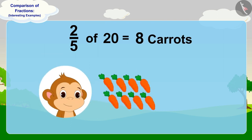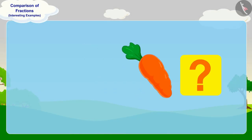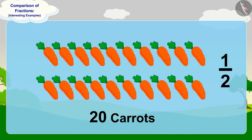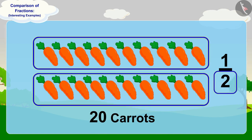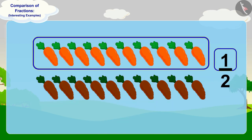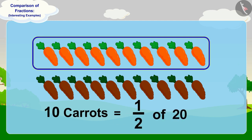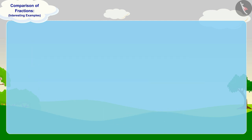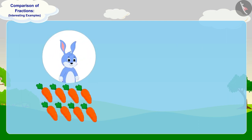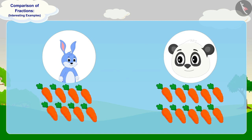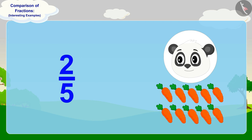Babban will give eight carrots to Banni. Now let us see how many carrots Babban will give to Gulu. To find half of twenty carrots, we have to divide them into two equal parts, and then one part has to be taken from it. In this way, ten carrots will be half of twenty carrots. Babban will give eight carrots to Banni and ten carrots to Gulu. Hence, Banni will get lesser carrots than Gulu. We can see that the fraction two-fifths is less than half.